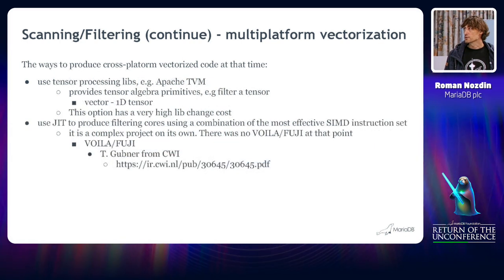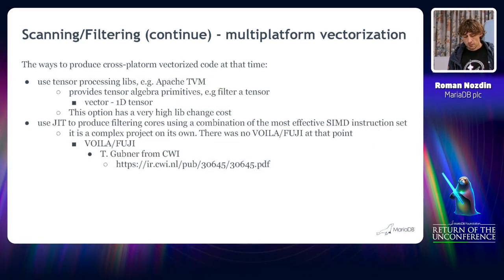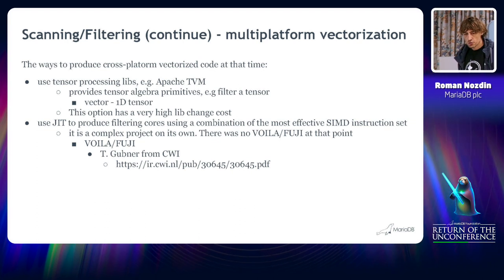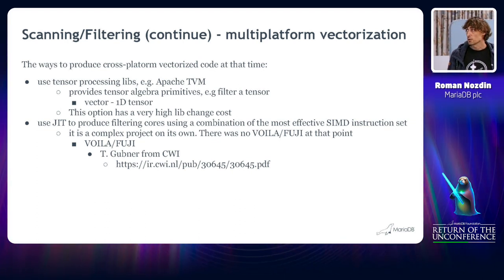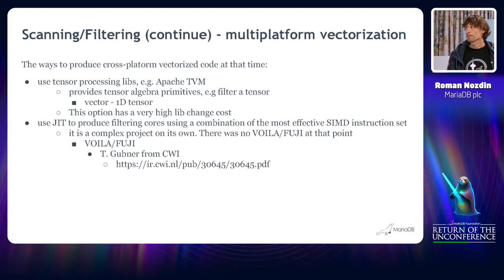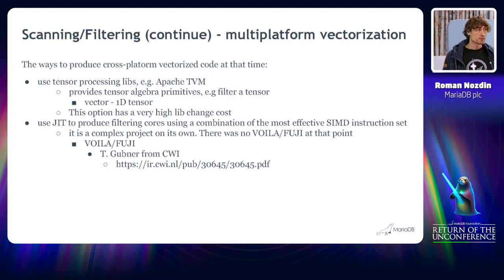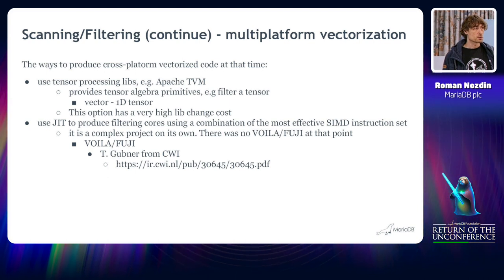So, we have these two options. We also have a number of other options that are by their nature JIT-oriented, just-in-time translation. And these are the tensor libraries that are widely used in machine learning. Like, if you consider a vector to be a tensor, a one-dimensional tensor, you can just use all the primitives that these libraries provide.